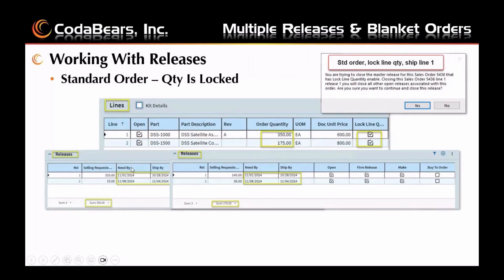You can add up the selling quantity. The line behavior is the same for a standard or blanket order if either has locked quantity on the line. Usually you will not lock the quantity of a standard order and it may not even have multiple releases per line. Notice if you do try to ship the first line, you will get a warning because the shipment knows that first line is a master release. Once you lock it, you'll get this warning pop up and you can say yes or no. If you say yes, all the releases related to that line will be closed, and you can go back and reopen them manually if needed.